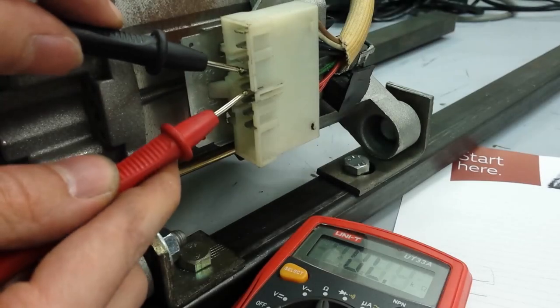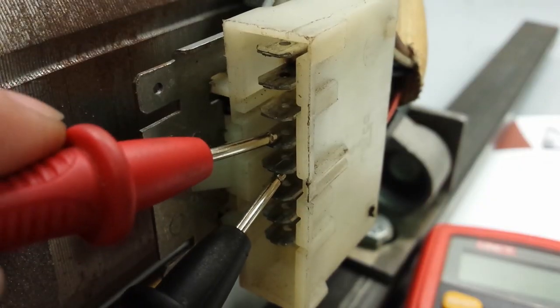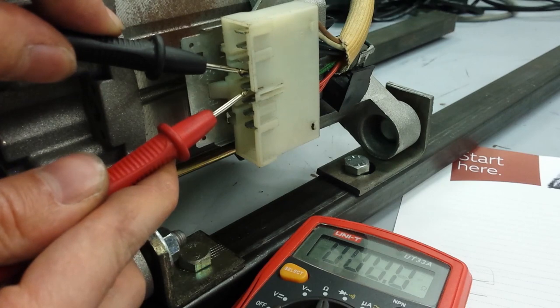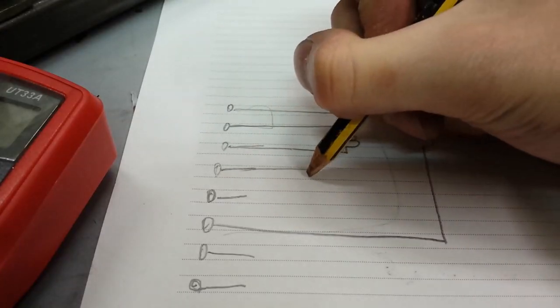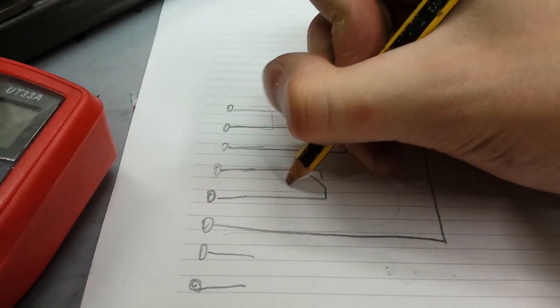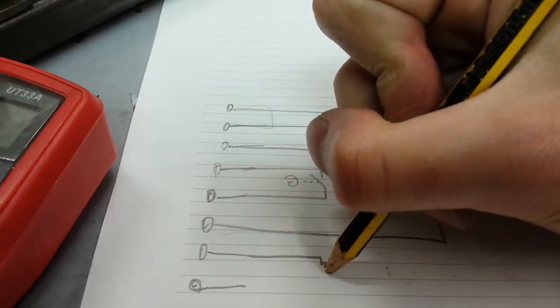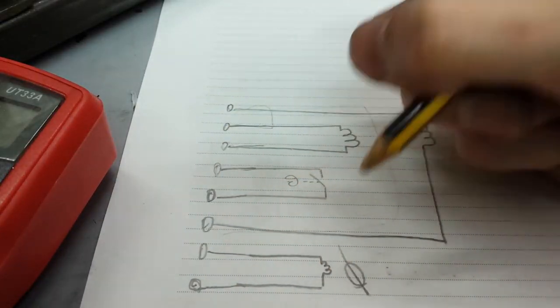For the optional terminals the thermal switch resistance is practically zero in standard conditions. And finally the RPM sensor has the highest resistance value, in my case over 100 ohms.